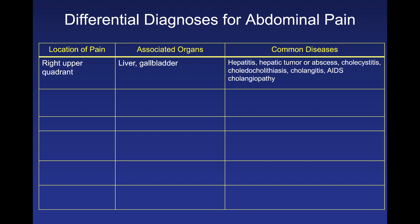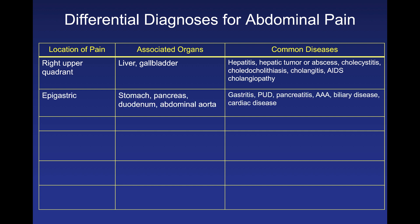If the pain is epigastric, remember the organs involved are the stomach, pancreas, duodenum, and abdominal aorta. Ask whether the patient has gastritis or peptic ulcer disease. If the pain is sharp, stabbing, and radiates to the back, consider an abdominal aortic aneurysm. A history of alcohol intake raises pancreatitis or stone disease. And always remember cardiac disease as a potential cause of epigastric pain.